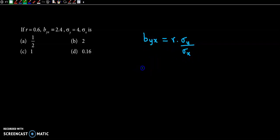Now, byx, its value is 2.4, equals r is 0.6 into standard deviation of y is 4 divided by standard deviation of x.